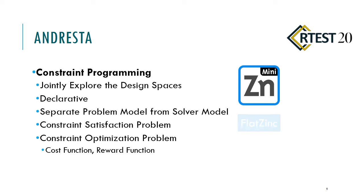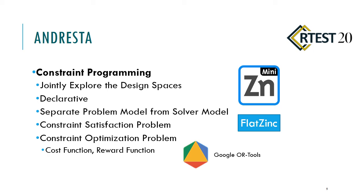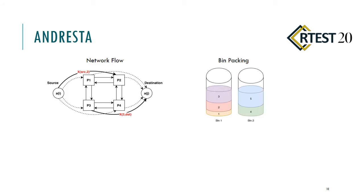UNRESSA uses MiniZinc to model the design space exploration problem as a constraint programming model. MiniZinc is a high-level language that helps us model problems in CP, and it is solver-independent. The MiniZinc IDE compiles MiniZinc language into an intermediate representation called FlatZinc, which is the input to several solvers such as GUILO tools or G-Code. NETWORK FLOW and BIN PACKING algorithms are two global constraints implemented in MiniZinc libraries that limit our mapping model.